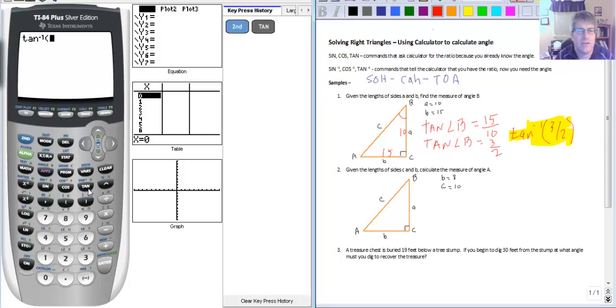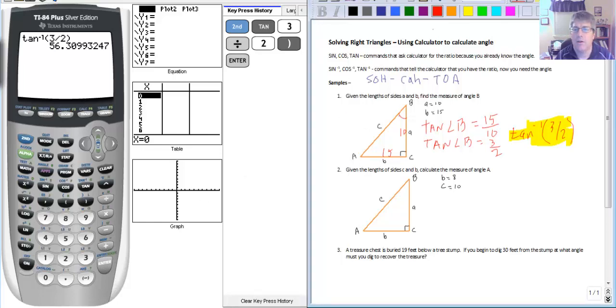So second tangent. Tangent to the negative 1 of 3 divided by 2. I suppose you could use the fraction or the decimal 1.5. Hit enter. And so now we know this angle.